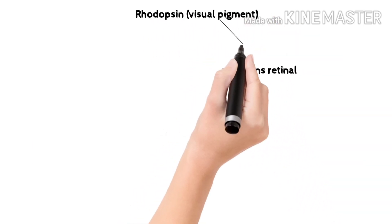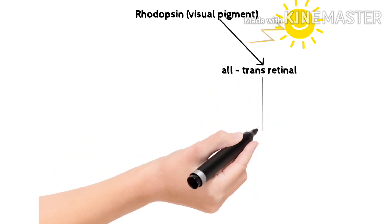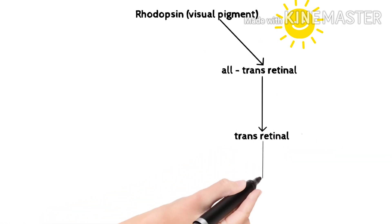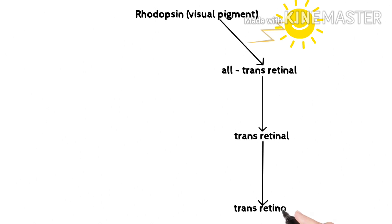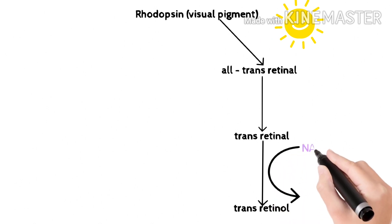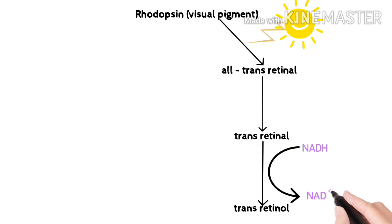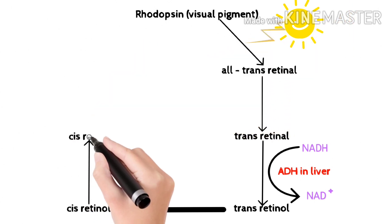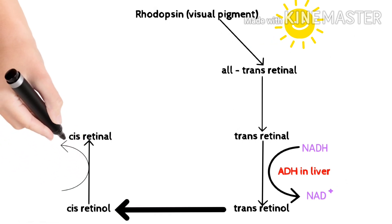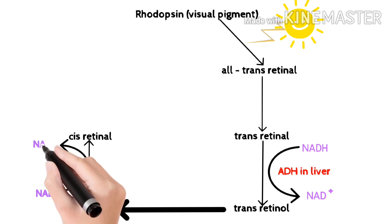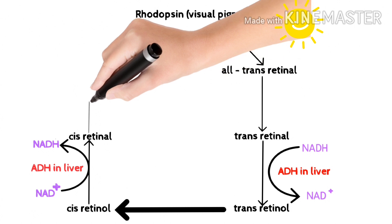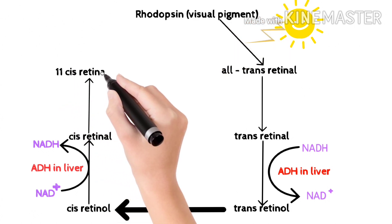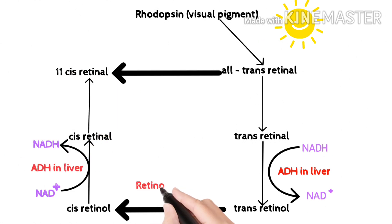Next, the most important function: Wald's visual cycle. Rhodopsin, a visual pigment, is converted to all-trans-retinal on exposure to light. All-trans-retinol is transported through blood to the liver. In the liver, all-trans-retinol is converted to all-trans-retinal by alcohol dehydrogenase with coenzyme NADH, which is converted to NAD+. Liver alcohol dehydrogenase requires zinc. All-trans-retinol is then isomerized to 11-cis-retinol. 11-cis-retinol is converted to 11-cis-retinal by alcohol dehydrogenase — here NAD+ is converted to NADH. It is then transported back to the retina through blood from the liver.